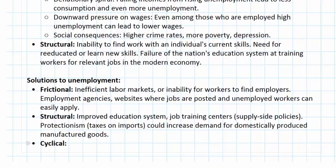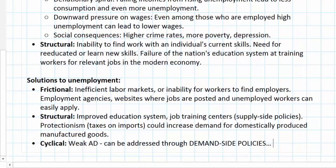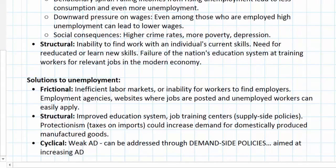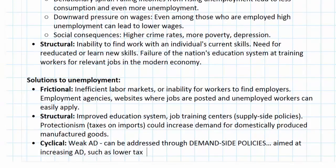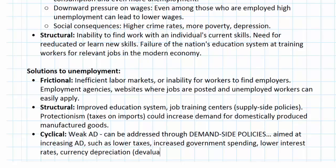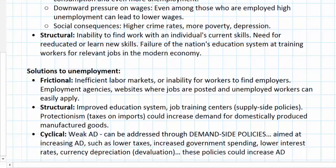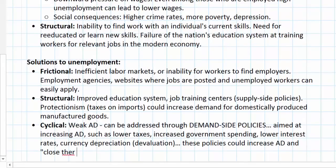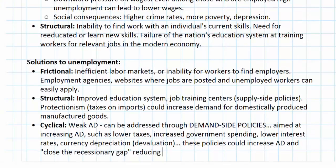Cyclical unemployment arises because of a fall in aggregate demand, which means it can be addressed through demand-side policies — any policies a government or central bank can enact to increase aggregate demand. These include lower taxes on households or firms, increased government spending, lower interest rates which lead to more consumption and investment, and perhaps currency depreciation or devaluation. If a government or central bank weakens its currency on the foreign exchange market, this increases net exports and creates more jobs. These policies could increase AD and close the recessionary gap, reducing cyclical unemployment.